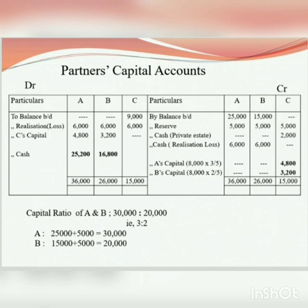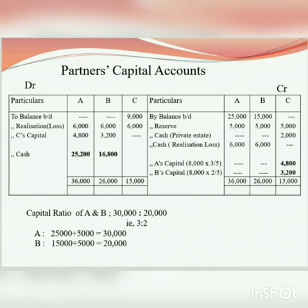The ratio is 3 to 2. The realization loss of Rs. 8,000 is shared between A and B in this ratio. A's share is 8,000 × 3/5 = Rs. 4,800, and B's share is 8,000 × 2/5 = Rs. 3,200. These amounts are debited to A and B's capital accounts respectively.